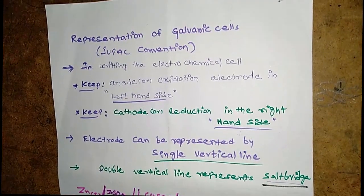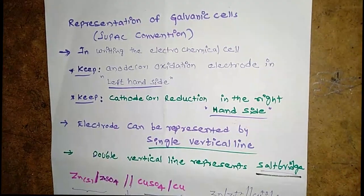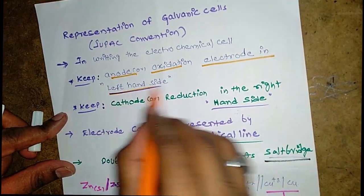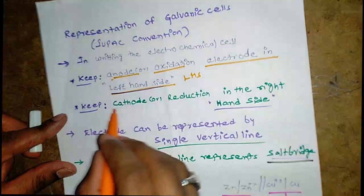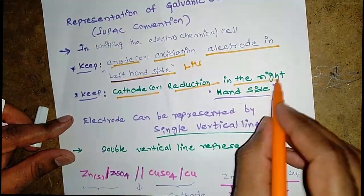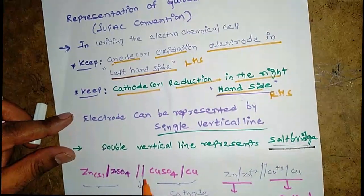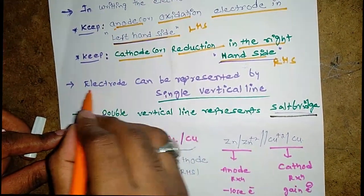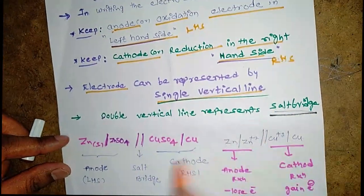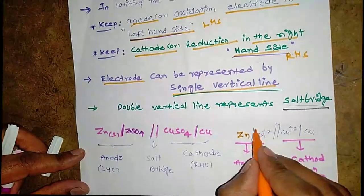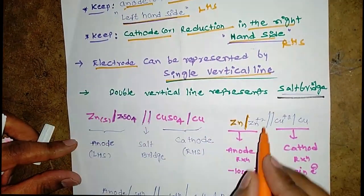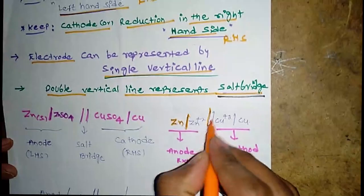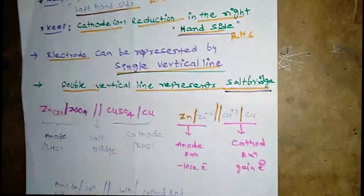The representation of a galvanic cell follows the IUPAC convention. The anode or oxidation electrode is kept on the left-hand side, and the cathode or reduction electrode is on the right-hand side. The electrode is represented by a single vertical line, and the salt bridge is represented by a double vertical line.